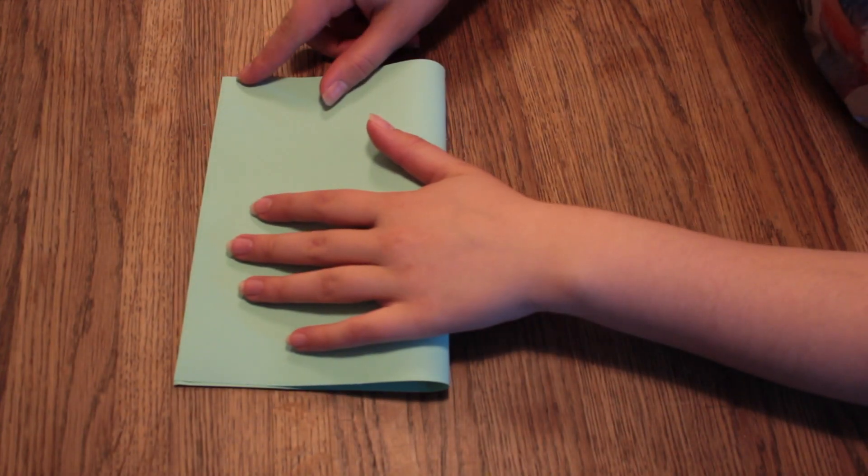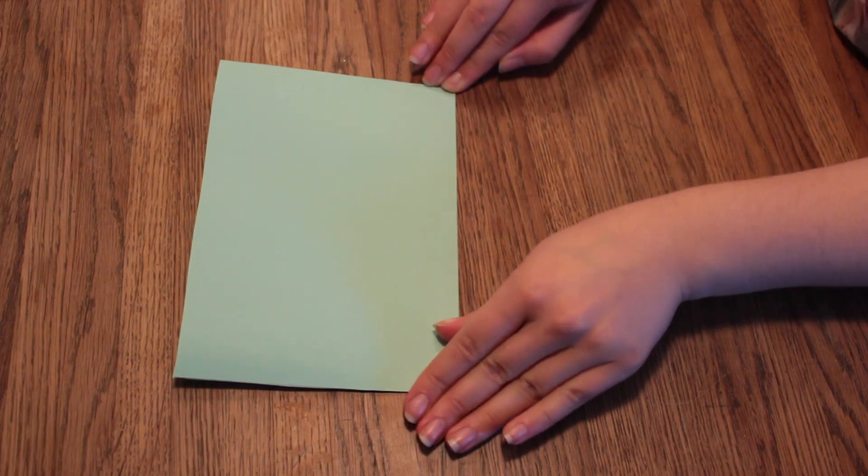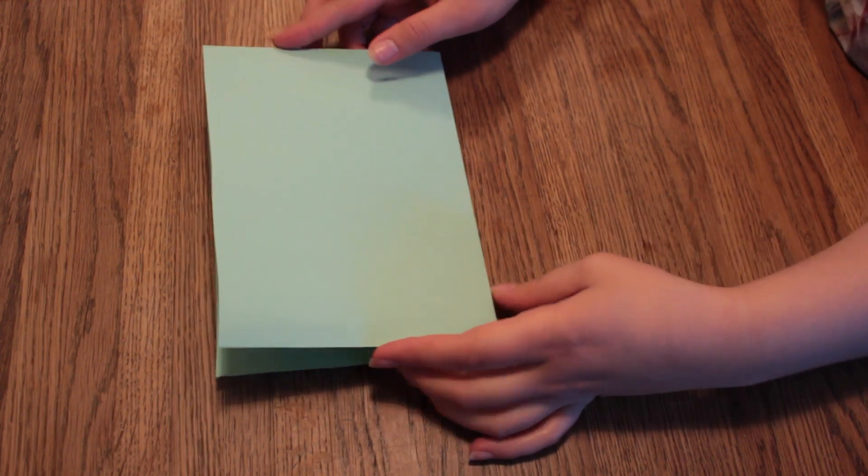Start out by folding the paper in half. Then press down firmly to make the scores very obvious and then open the paper.